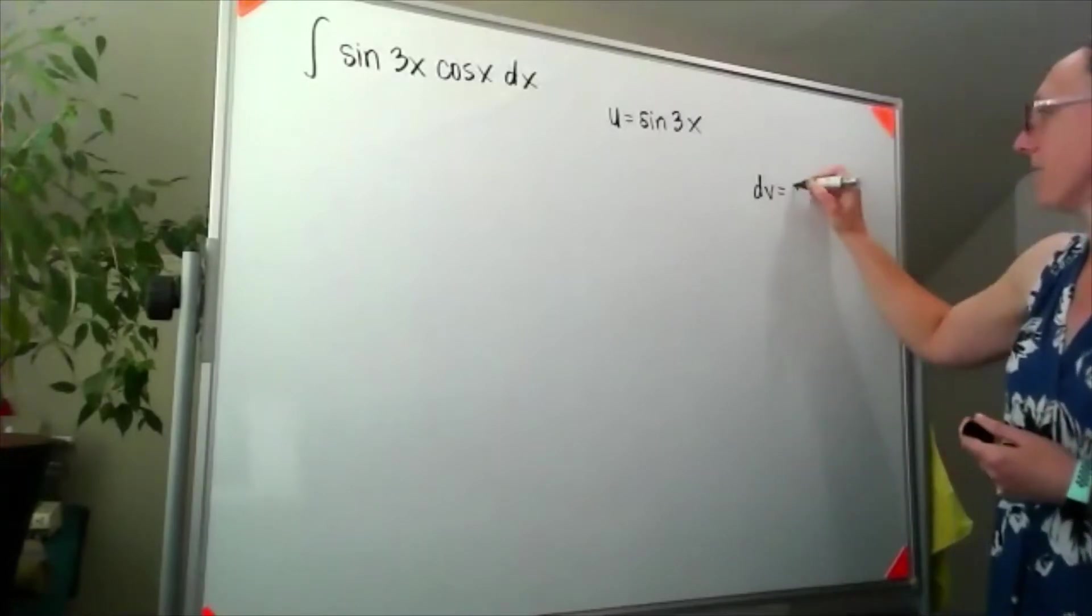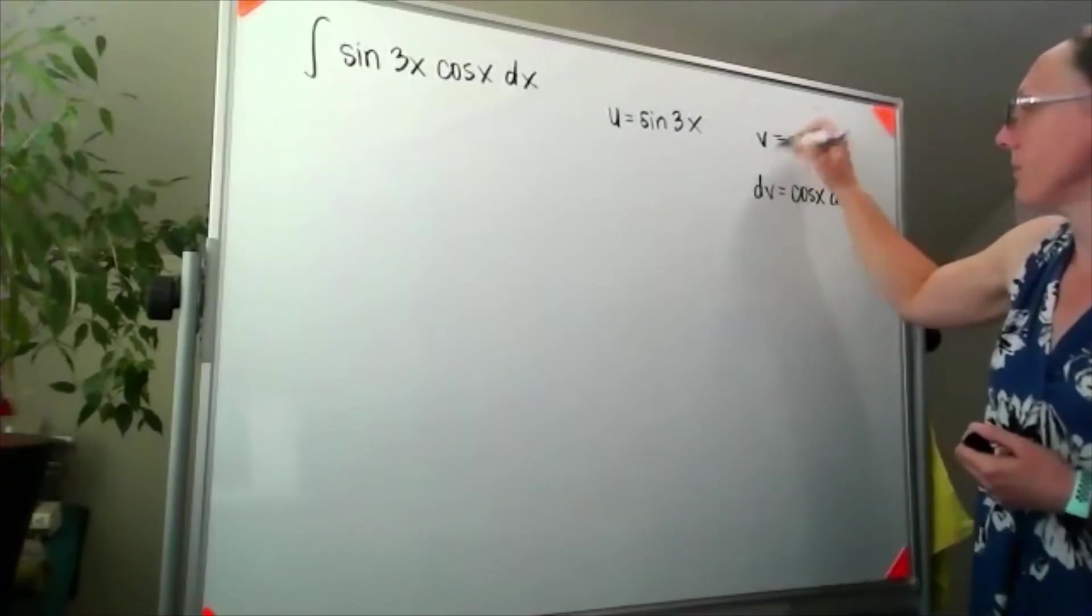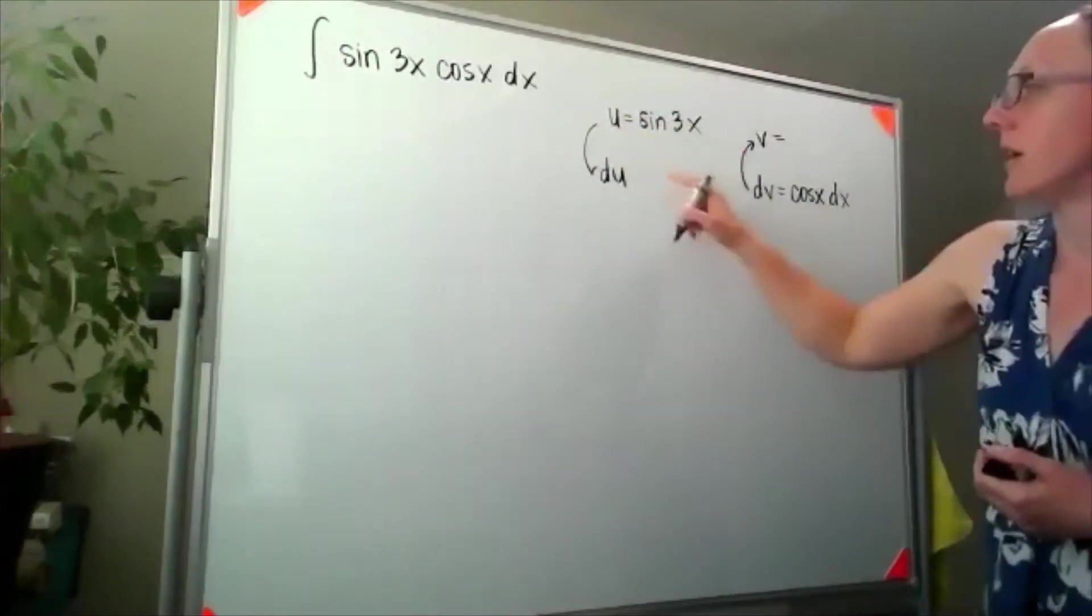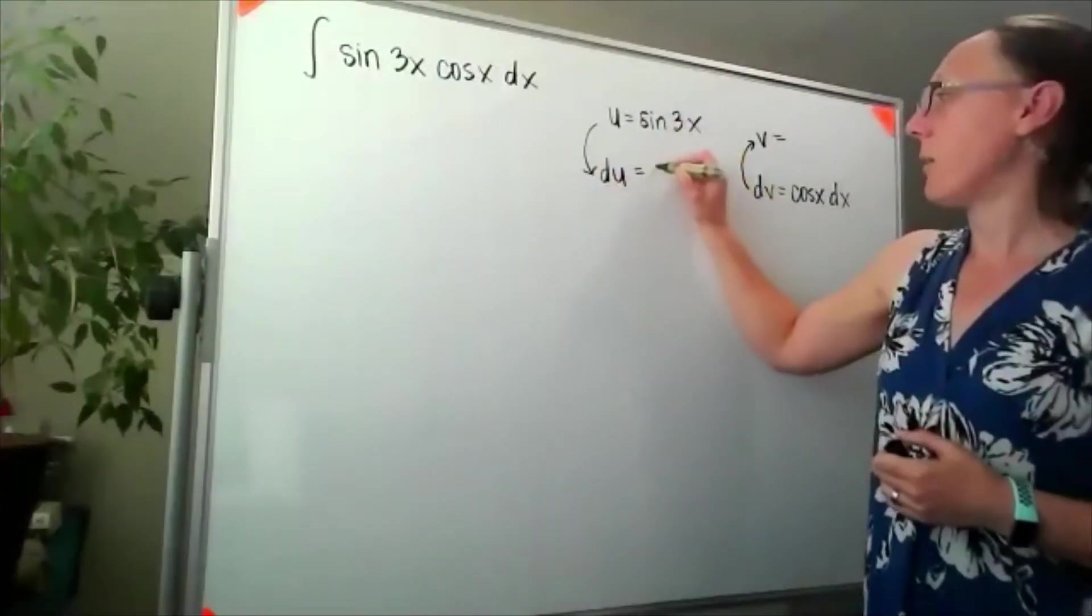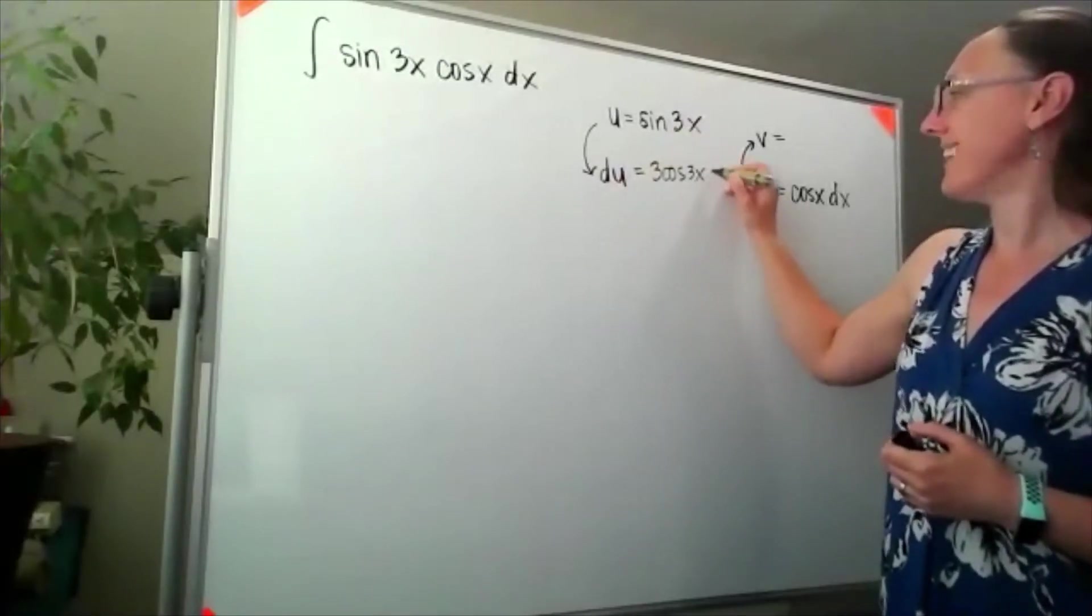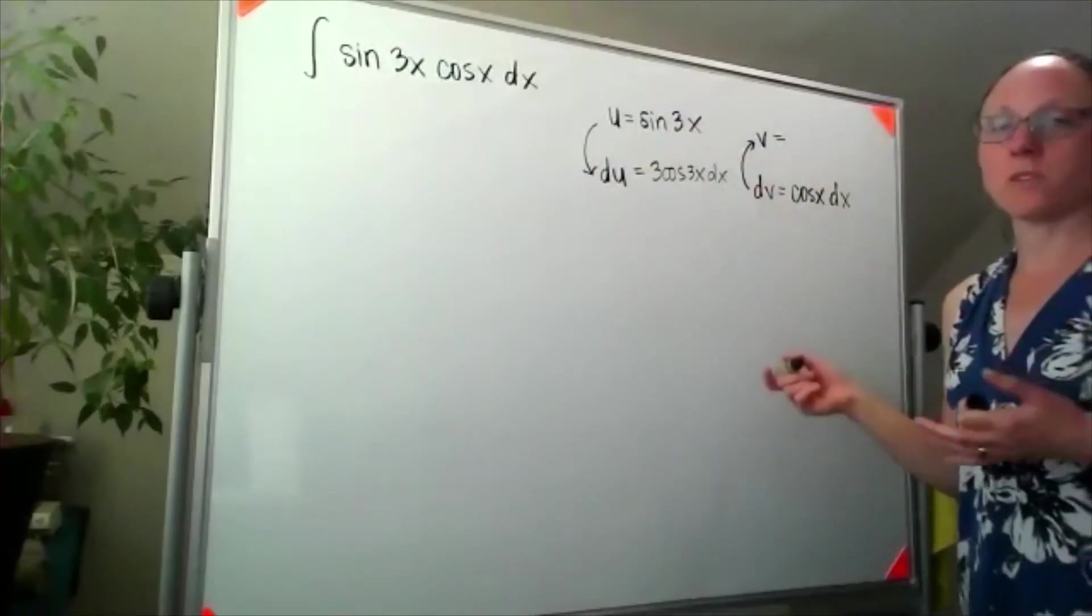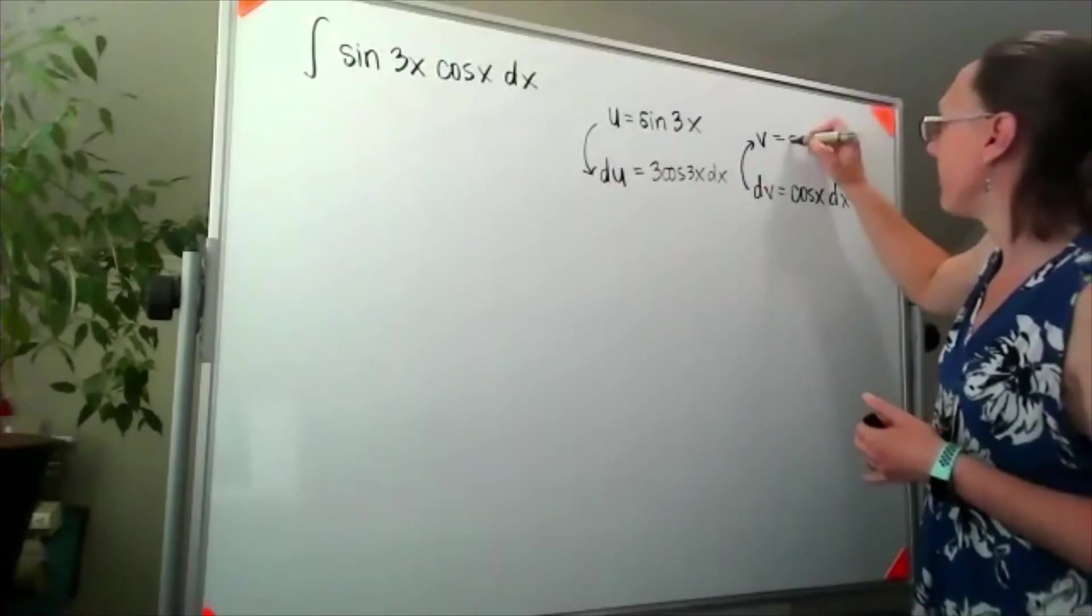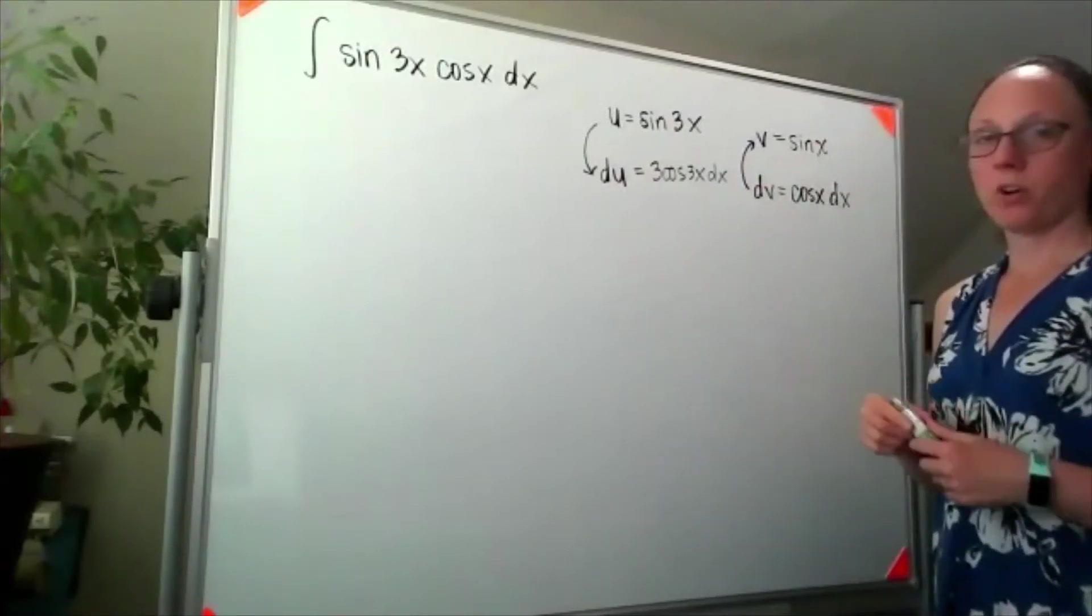When I differentiate sine of 3x, I'm gonna get negative 3 cosine of 3x, so du is negative 3 cosine of 3x dx. And when I take the antiderivative of cosine of x, the function whose derivative is cosine - well, that's sine of x.